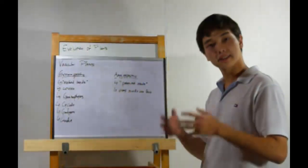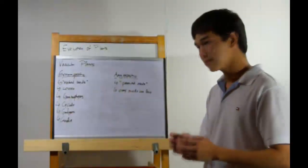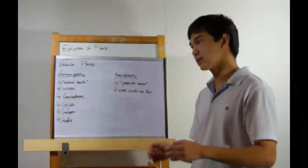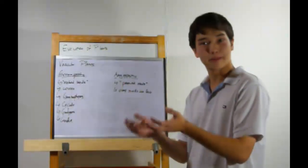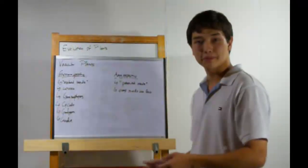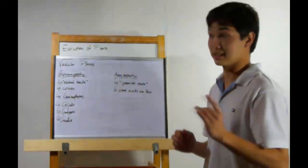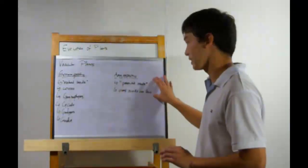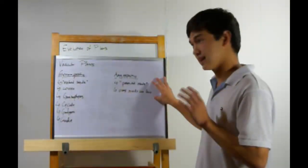Alright, next up, angiosperms. These are the protected seeds. Why? Well, once fertilization occurs, the ovary will expand into a fruit, thereby protecting the seeds. Gymnosperms, their seeds are not protected by fruit, and that's why they're naked. So, yes, angiosperms. Flowering plants and anything that has a fruit.